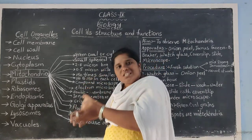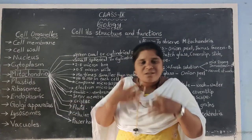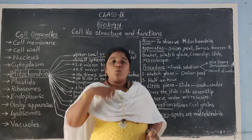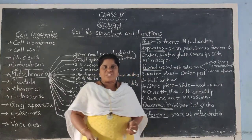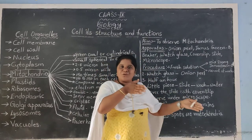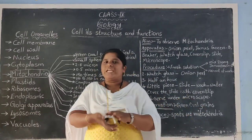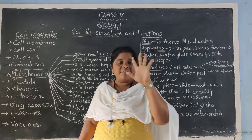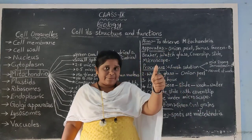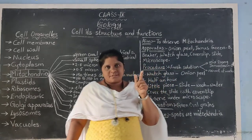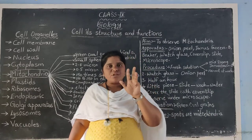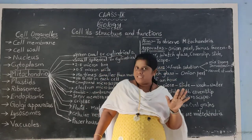Before we look at the features of mitochondria, let us understand how to observe mitochondria and what its internal structure looks like. For that, we are going to do a lab activity. Each and every lab activity has five main headings: first is aim, second is apparatus, third is procedure, fourth is observation, and fifth is inference.